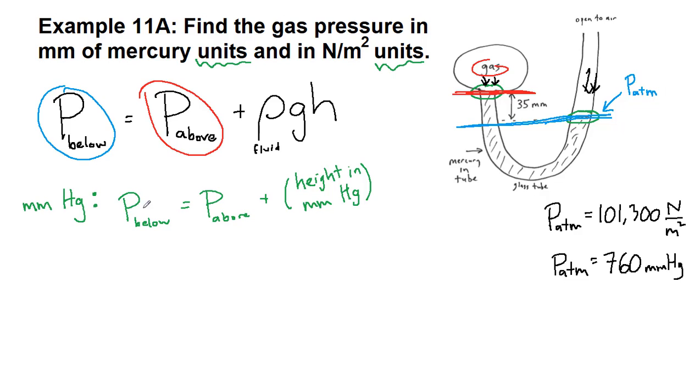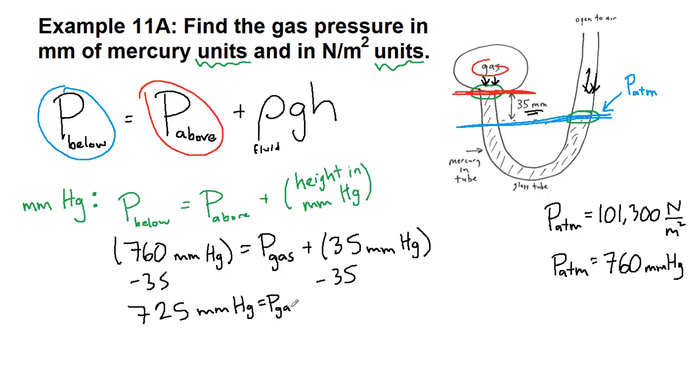All right, so the pressure below, the atmospheric pressure, is 760. And this is millimeters of mercury. The pressure above is what we're looking for. That's the pressure of the gas. And then the height difference we were given in millimeters is 35 millimeters. And we're double checking that it is mercury in the tube. So all we have to do is subtract 35 on both sides.